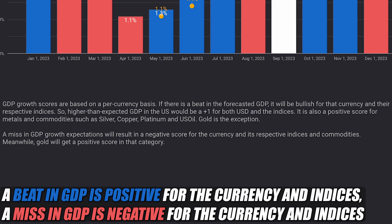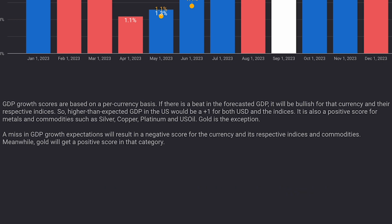Gold is the exception. A miss in GDP growth expectations will result in a negative score for the currency, its respective indices and commodities. Meanwhile, gold will get a positive score in that category.